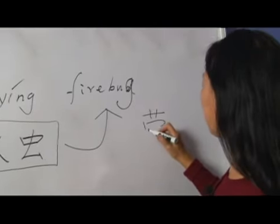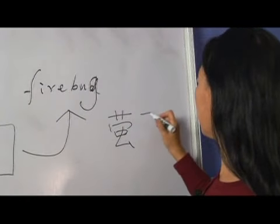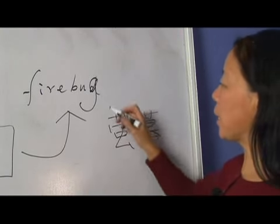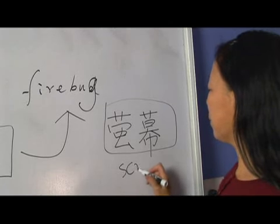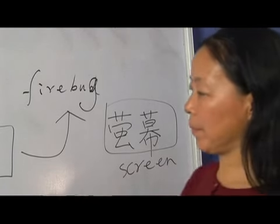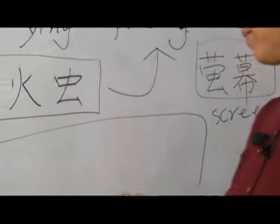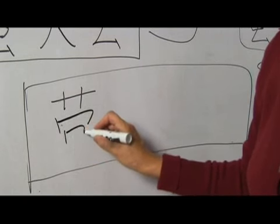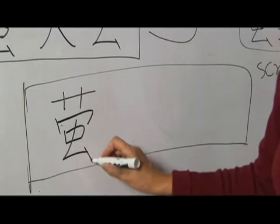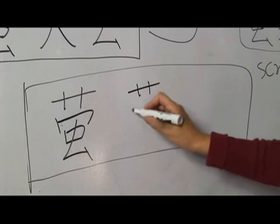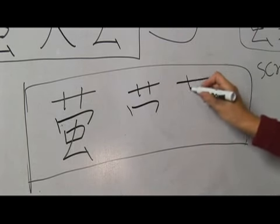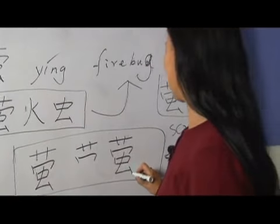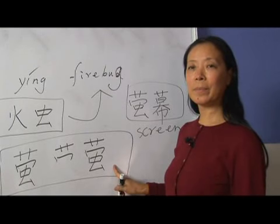We also say yíng mù. Mù means curtain. So yíng mù means screen.